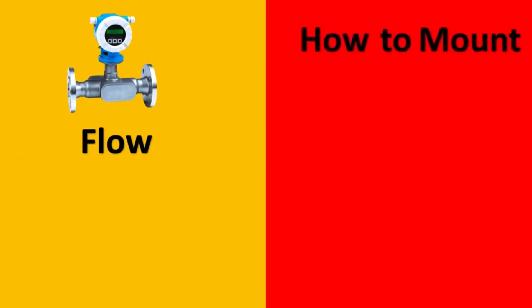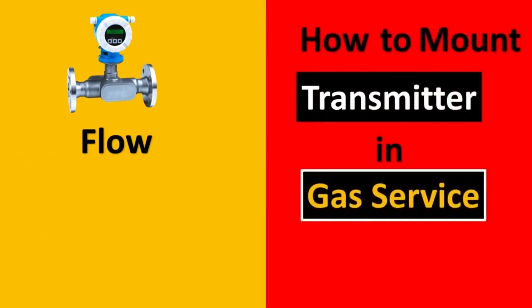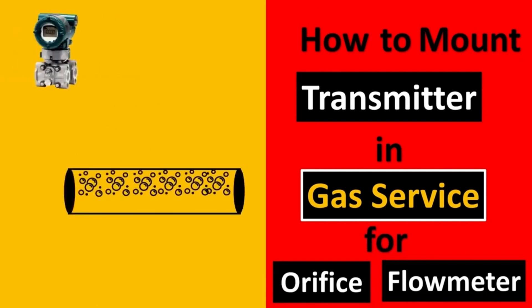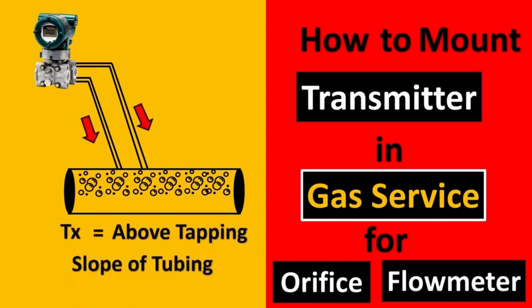In flow, one of the most asked questions is how to mount the transmitter in gas service, especially for orifice flow meters. Let's take this example: here's your pipe and here's gas flowing through it. Now the transmitter is put on top of the pipe or top of the tapping, and the second important thing to note is that the slope of the tubing has to be towards the pipe.